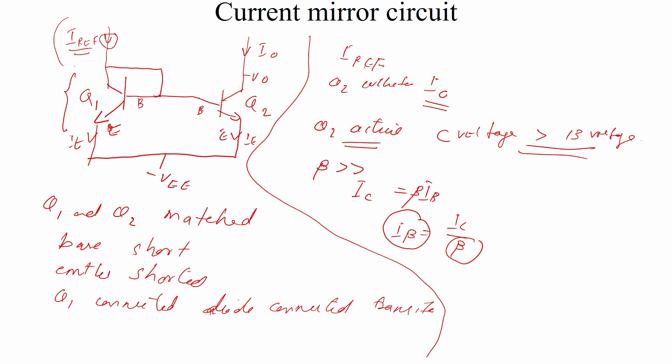As long as Q2 is in the active region, the collector current IE will be the same. IE is almost equal to I0, which is approximately equal to I-reference. The VBE voltage across Q1 equals the base-emitter voltage of Q2 because the bases and emitters of the two transistors are shorted. So I0 is almost equal to I-reference.